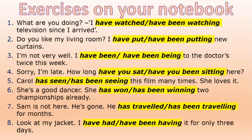Number six: 'She has won two championships already' or 'she has been winning two championships already.' Number seven: 'He has traveled for months' or 'he has been traveling for months.' Number eight: 'I have had it for only three days' or 'I have been having it for only three days.' Read the whole sentence carefully — it's very important to read the complete sentence to identify the correct tense. Okay guys, that's all for today. Thank you so much for your attention!